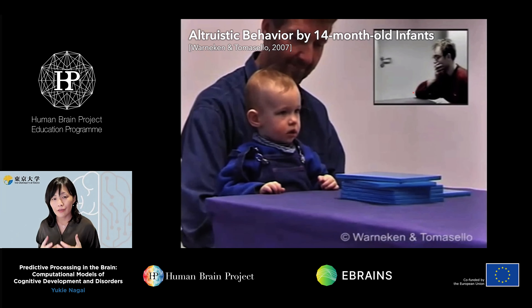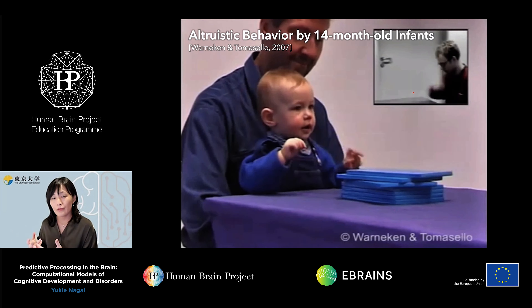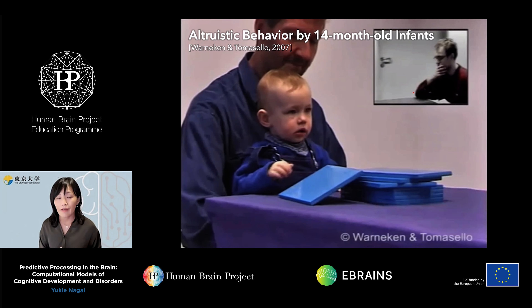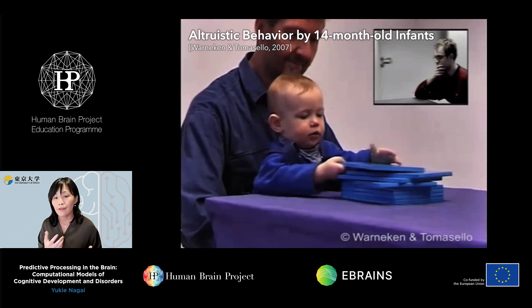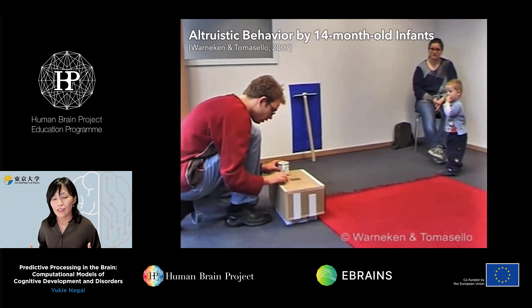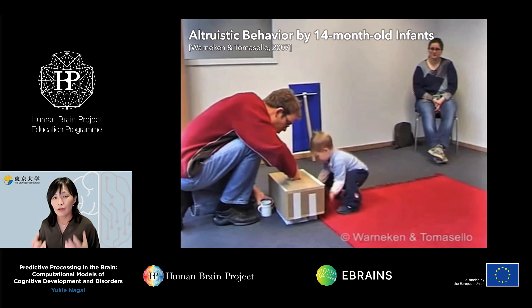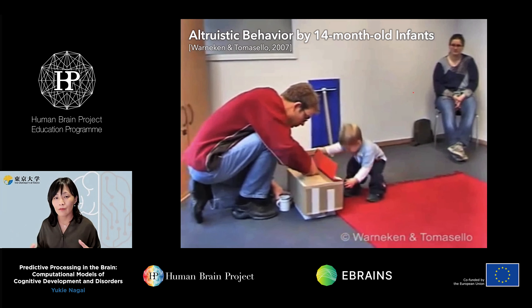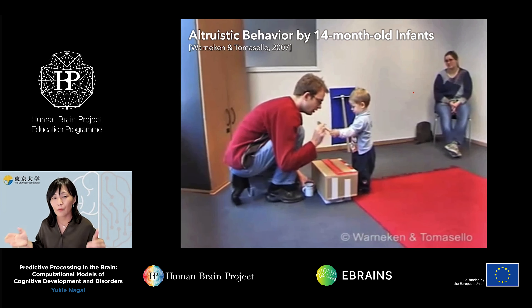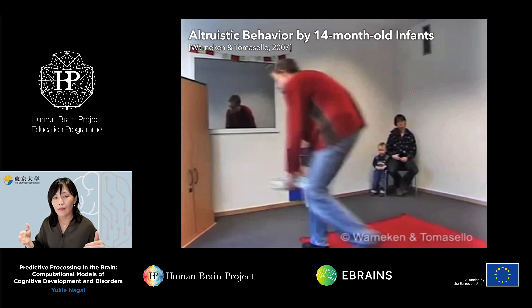This altruistic behavior requires not only social motivation, but also the ability to generate one's own action and to infer the intention of another person. So altruistic behavior as an example shows that social cognitive behaviors require many steps of cognitive abilities. The question here again is: how and by what mechanism can this development be driven?